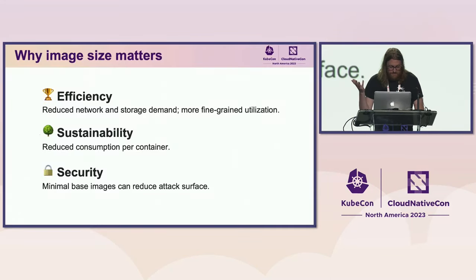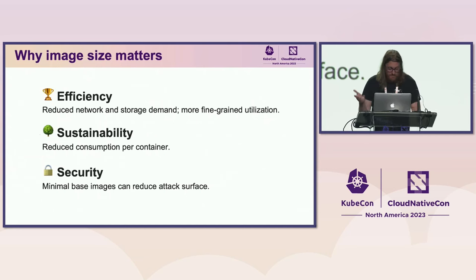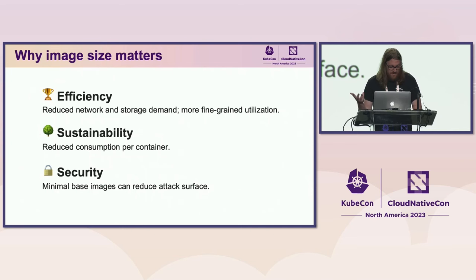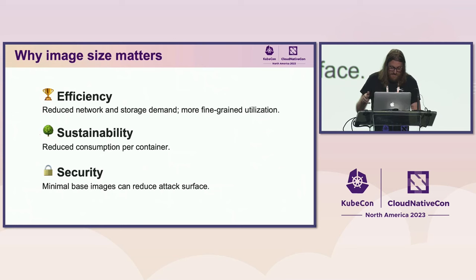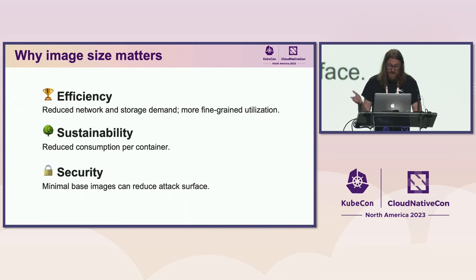So first, why does this matter? Smaller images reduce time to build, important for CI, and time to pull, which is important when spinning up a new node in a production environment. Improved performance and utilization drives sustainability, and performance enhancements are particularly impactful on power-efficient hardware. Finally, minimal base images reduce attack surface and defend against privilege escalation attacks.